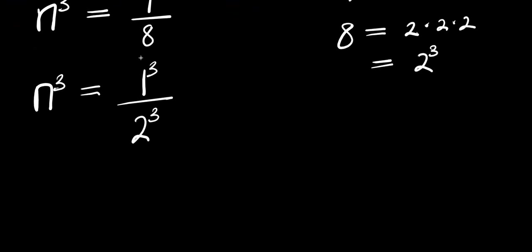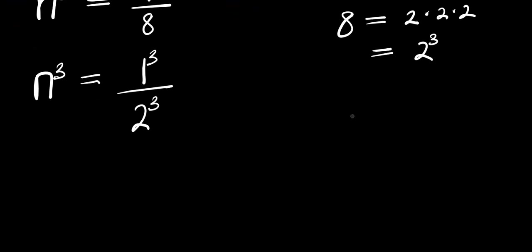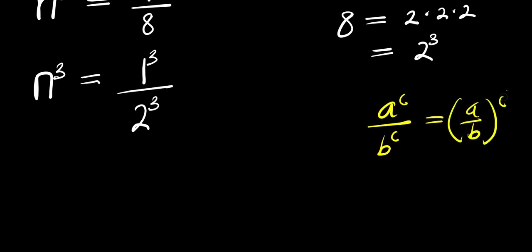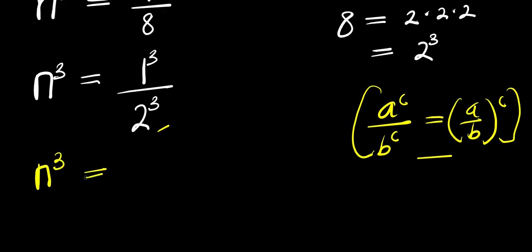Now, if you have a to the power of c divided by b to the power of c, this equals (a divided by b) to the power of c. Applying this rule here, we get n³ equals (1 divided by 2) to the power of 3.